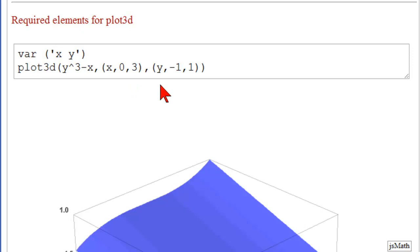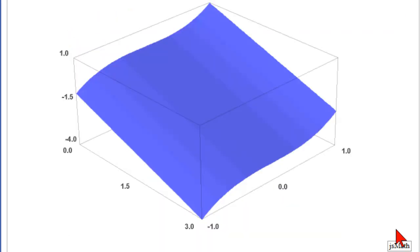And our second variable is y, from minus 1 to 1. So y will be plotted on the right axis. Let's see our graph. Here it is.